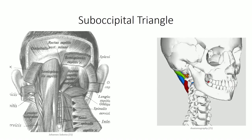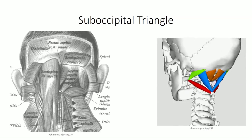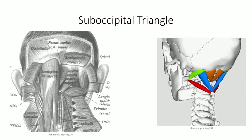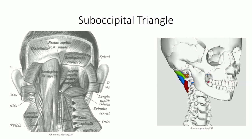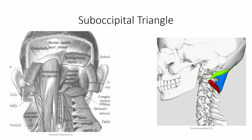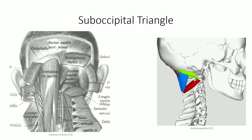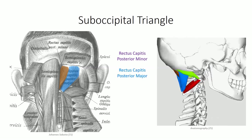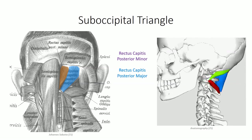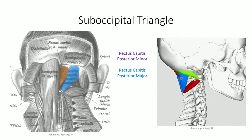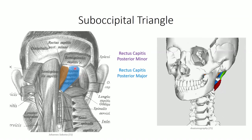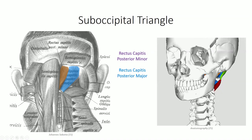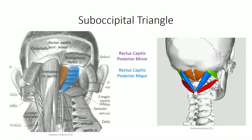We conclude this lesson with a discussion of the suboccipital region, located quite deep to the other muscles discussed so far. It's composed of a series of small muscles in the triangular region they define, which serves as a landmark for important neurovascular structures. Two of these muscles are the rectus capitis posterior muscles: the rectus capitis posterior minor, originating off the posterior tubercle of C1 and inserting on the inferior nuchal line, and the rectus capitis posterior major, originating off the spinous processes of C2 and inserting just lateral to the minor. Both aid in extension of the occiput on C1.